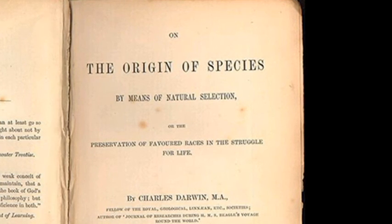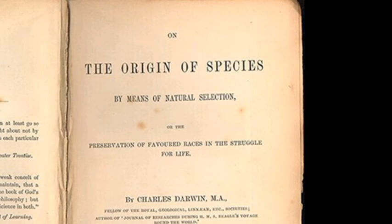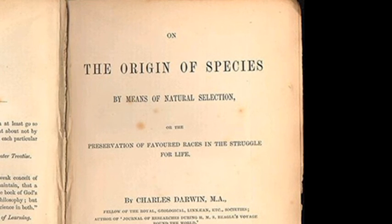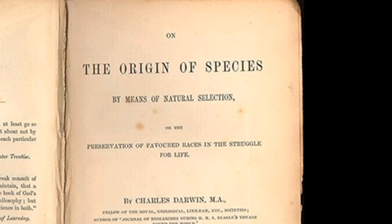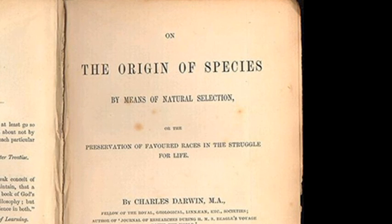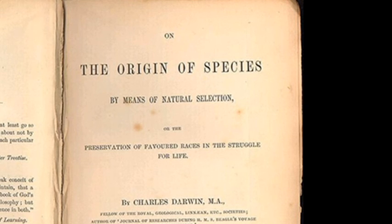Although the book barely hinted at the issue of human evolution, it was, and continues to be, highly controversial. Despite this, Darwin's theory of evolution by natural selection now forms the core of all modern life sciences.